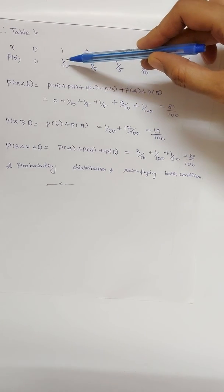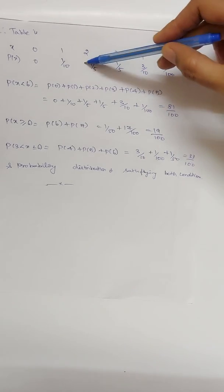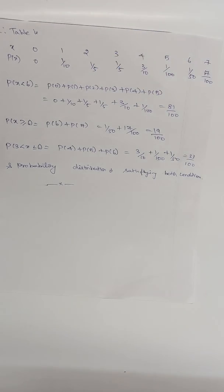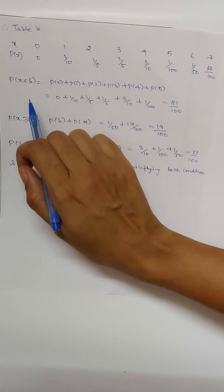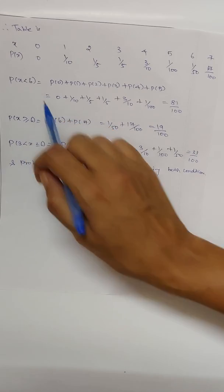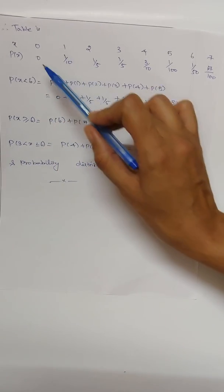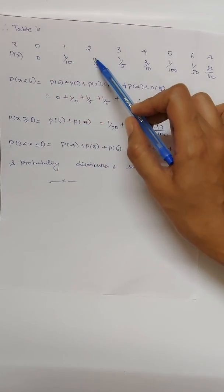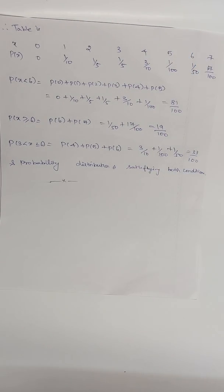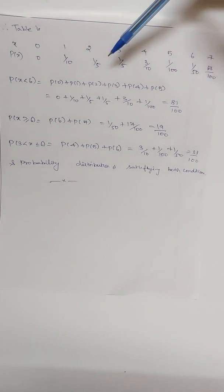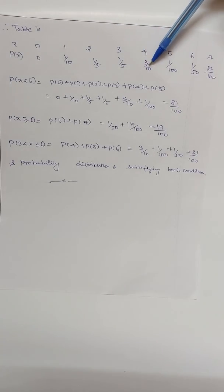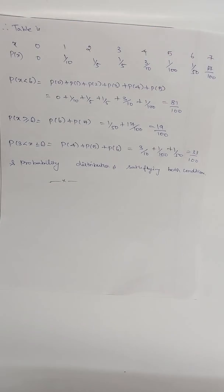With k = 1/10, we replace k in all expressions — for example, 2k = 2/10 = 1/5. For P(X < 6), strictly less than 6 means six is not included, so we sum probabilities for X = 0, 1, 2, 3, 4, 5: 1/10 + 0 + 1/10 + 1/5 + 3/10 + 1/100, giving the result.